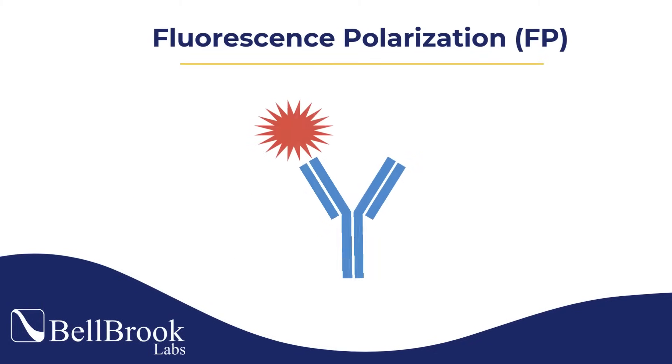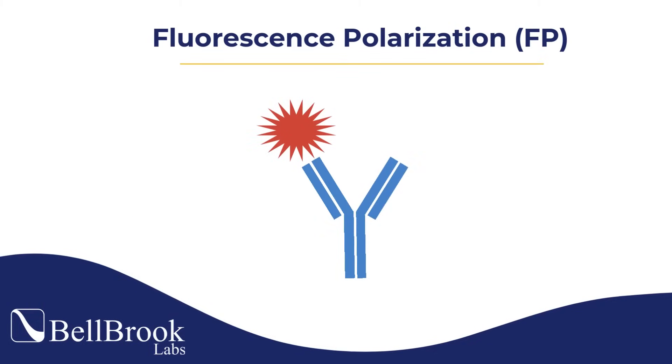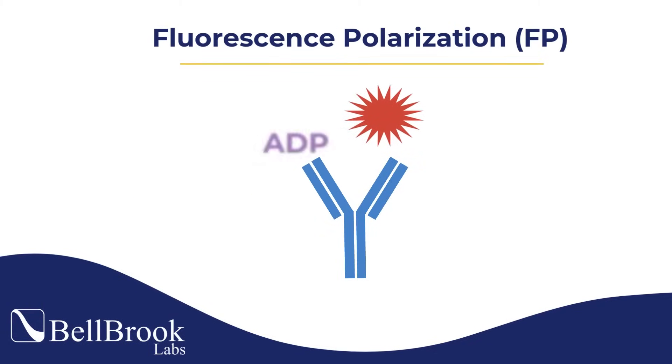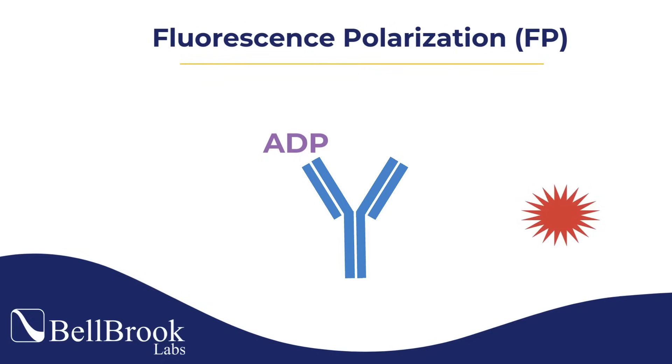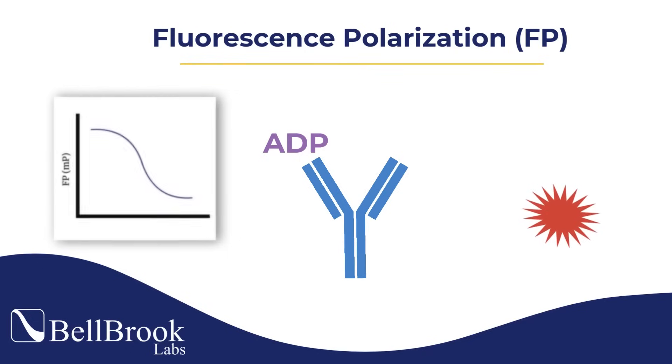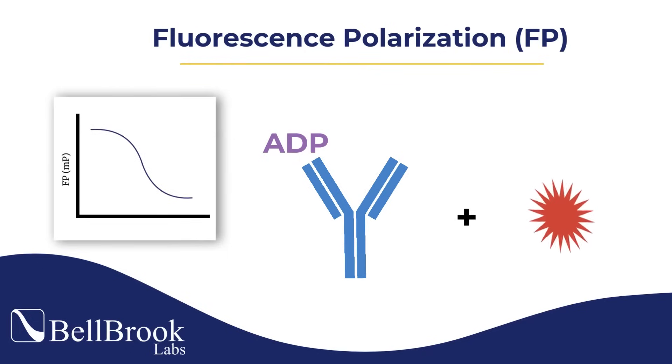FP measures the tumbling speed of the tracer. When competed off, the tracer can spin freely, reducing the mP signal.